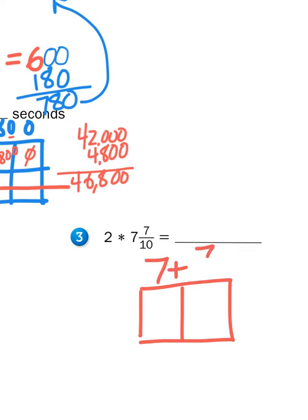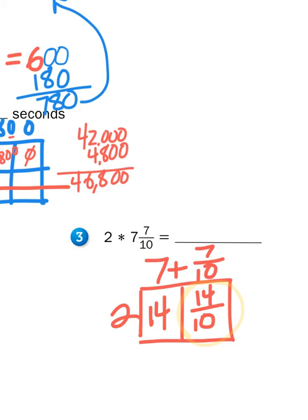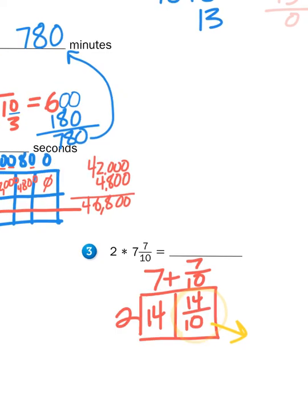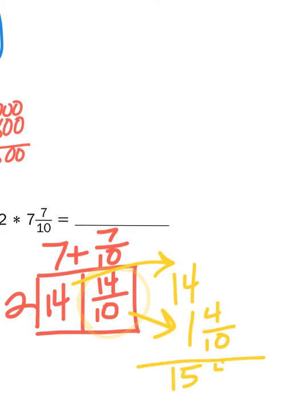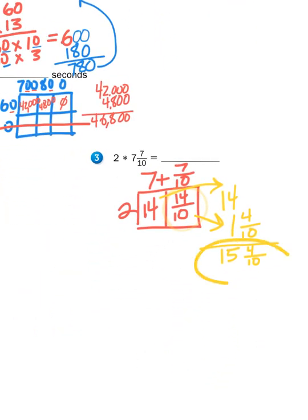Two times seven and seven-tenths. I'm going to approach it multiplication style using the partitioning rectangle strategy. Two times seven is fourteen; two times seven-tenths gives me fourteen-tenths. So right now my answer is fourteen and fourteen-tenths. Fourteen-tenths is an improper fraction — thinking of dimes, fourteen dimes is one dollar and forty cents, or one and four-tenths. So I convert fourteen-tenths to one and four-tenths, then add that one to fourteen: fourteen plus one is fifteen, leaving four-tenths. The answer is fifteen and four-tenths.